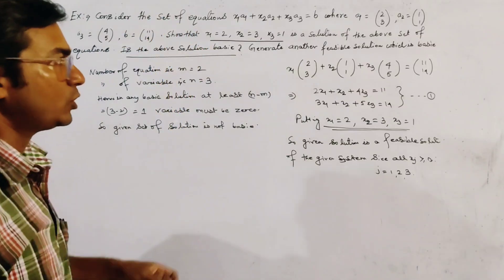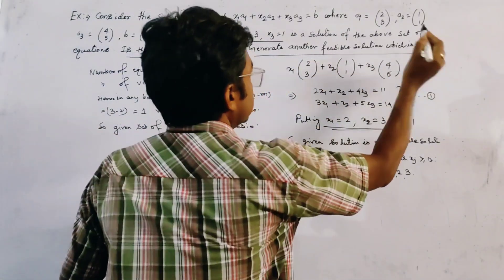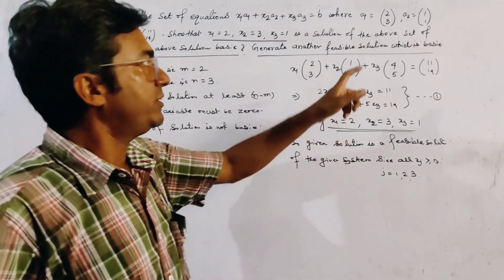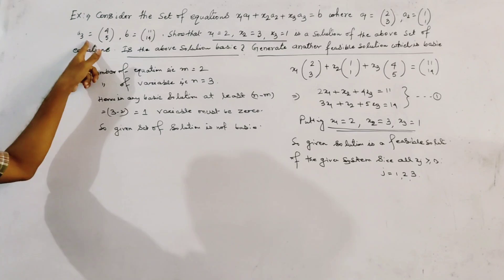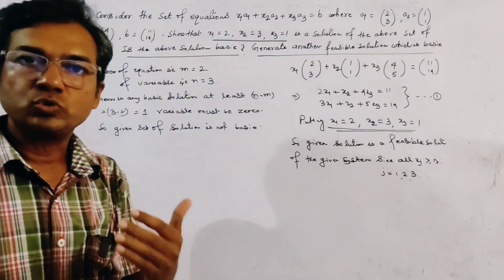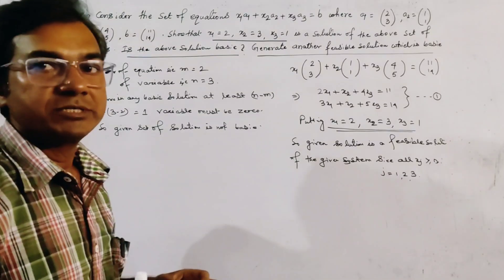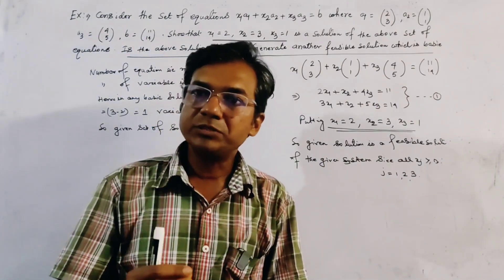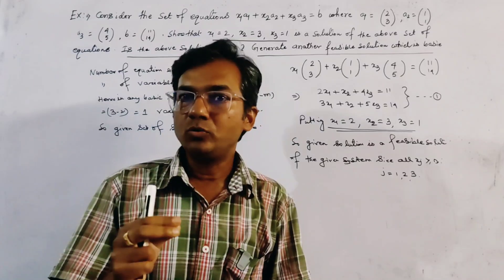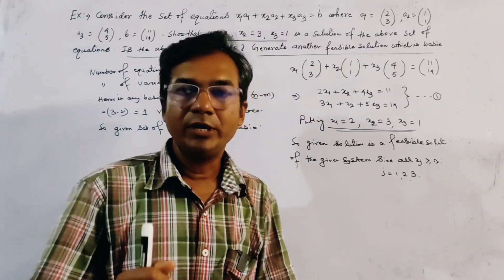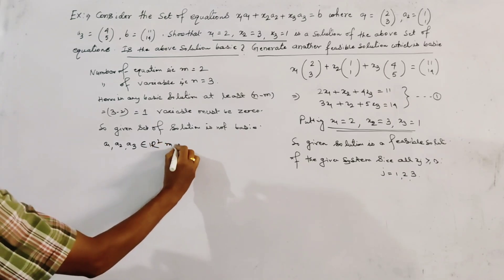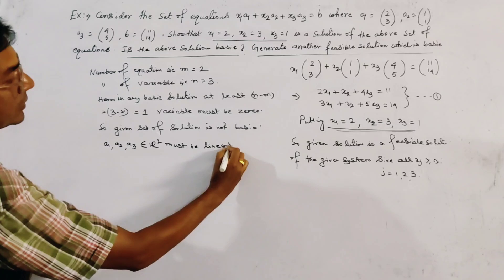Now the most important part: we have to generate the basic feasible solution from the given feasible solution. The three given vectors a1, a2, and a3 belong to R2. In a two-dimensional vector space, at most two vectors may be linearly independent, so three vectors in R2 must be linearly dependent.